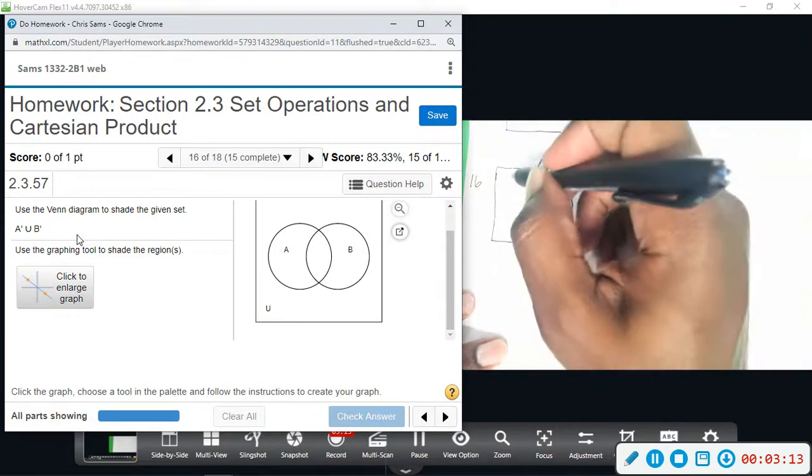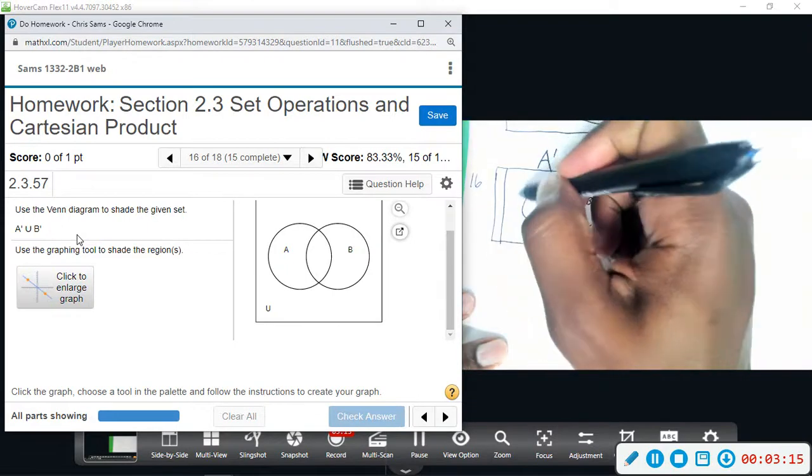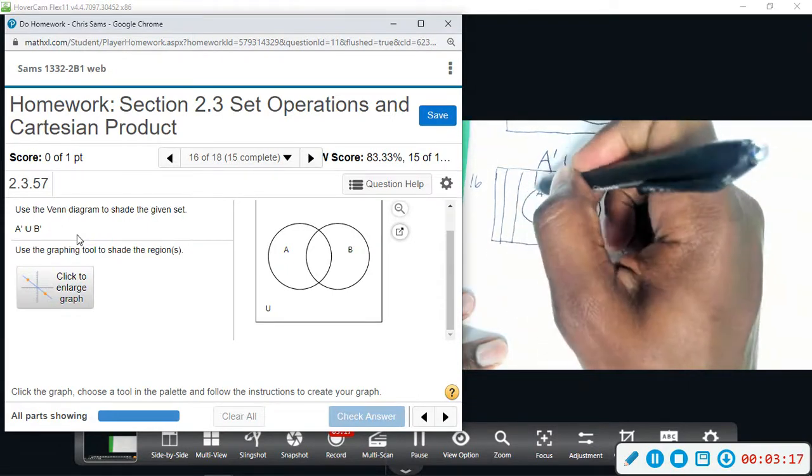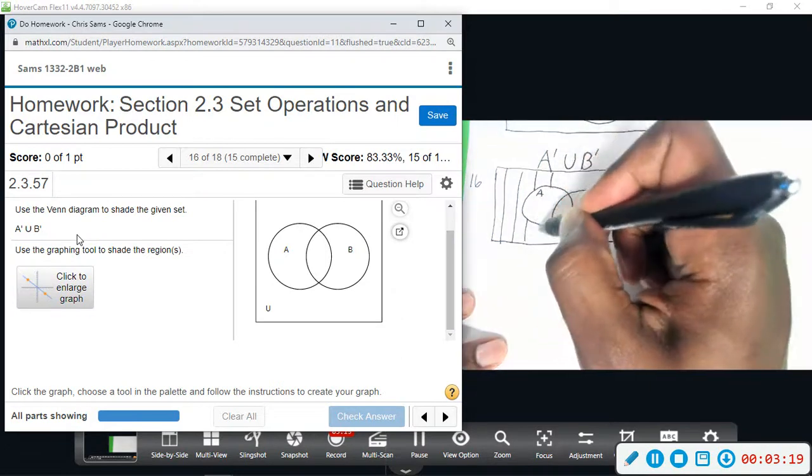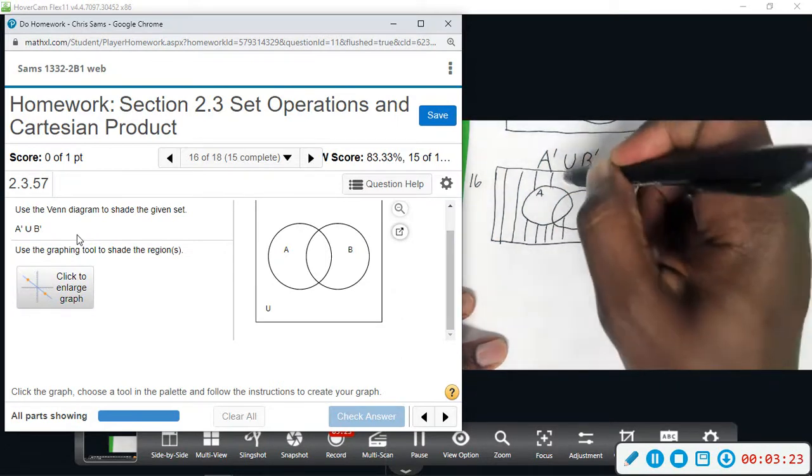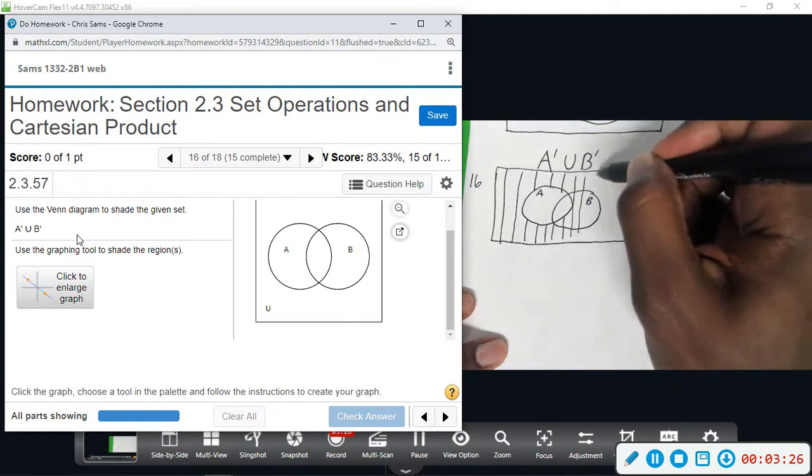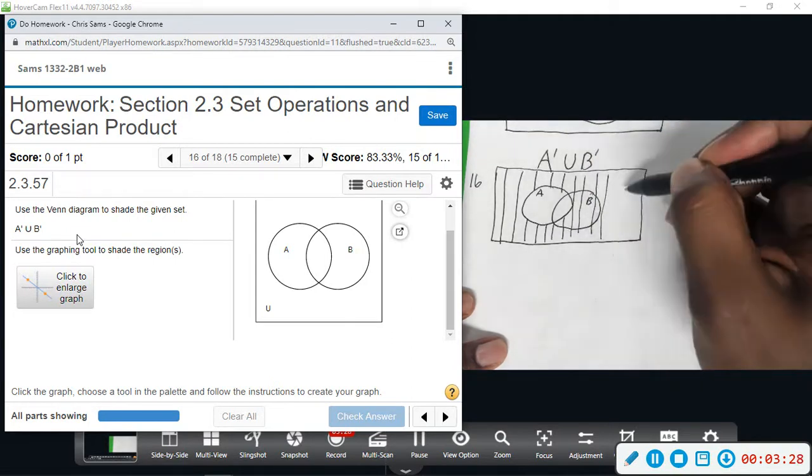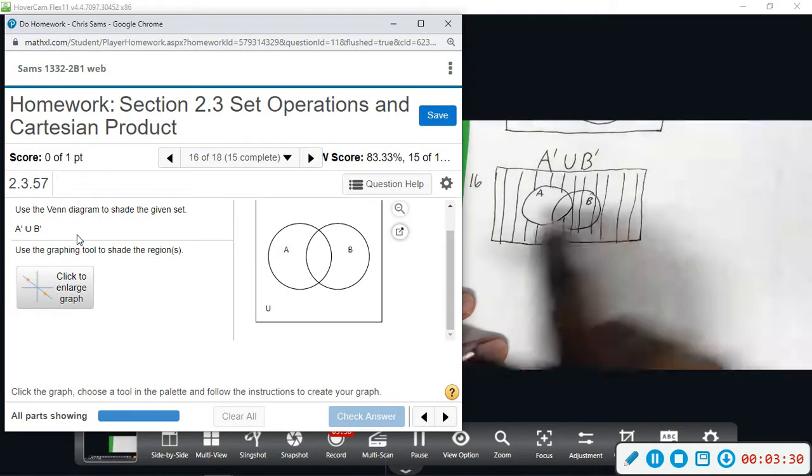When I do A complement, I'm going to do vertical bars. I'm going to do everything except for A. Everything except for circle A is going to get shaded or have vertical bars. So notice part of B is shaded but not all of B is shaded. So this is A complement, everything except for circle A.